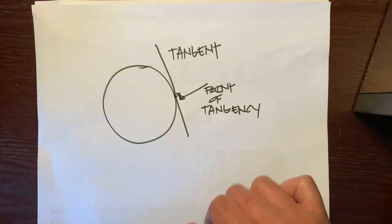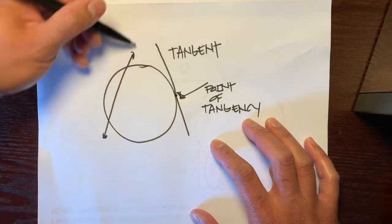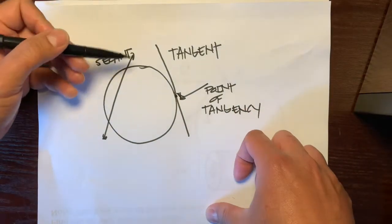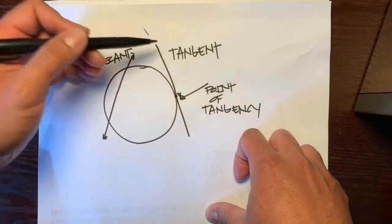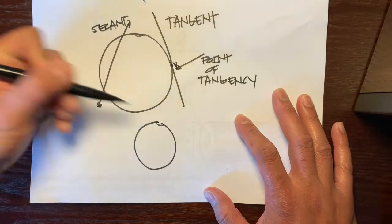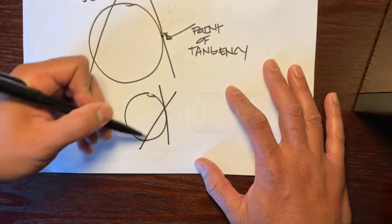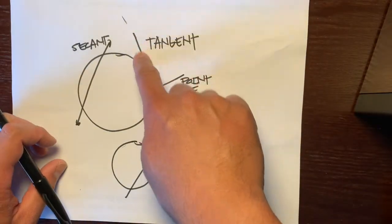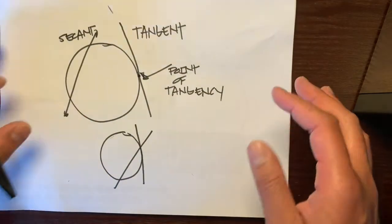And another word is this right here — this line is called a secant line. A secant line is a line that intersects or goes through the circle twice. So a tangent and a secant. We're going to be dealing with problems created by a tangent line and a secant line. The tangent intersects the circle once, and the secant intersects the circle twice.